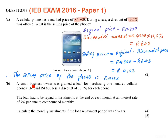Part B says: a small business owner was granted a loan for purchasing 100 cellular phones. He paid 4800 less a discount of 13.5% for each phone. The loan had to be repaid in installments at the end of each month at an interest rate of 7% per annum compounded monthly. Calculate the monthly installments if the loan repayment period was five years.